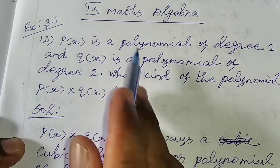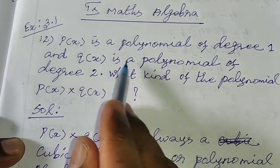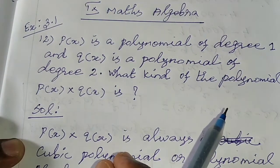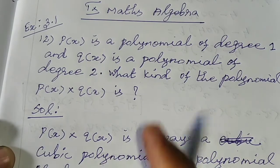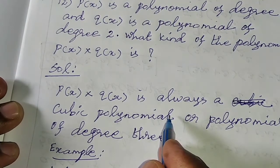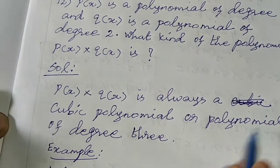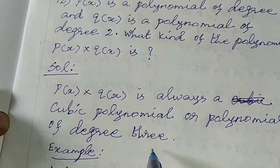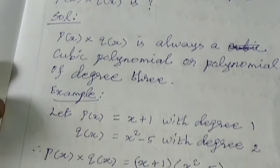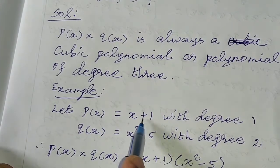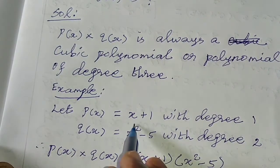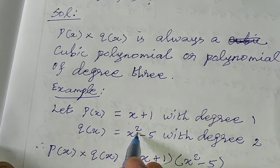So P of x is a polynomial of degree 1 and Q of x is a polynomial of degree 2. If you write this in the exam, you can see one example of P of x. What is P of x? x plus 1, with degree 1, highest power 1. That is Q of x: x square minus 5, with degree 2, highest power 2.